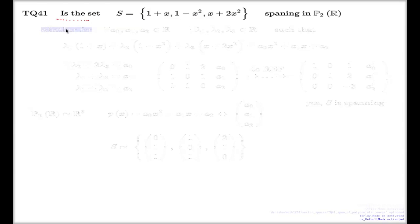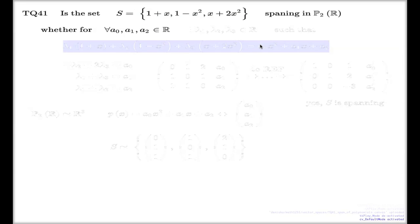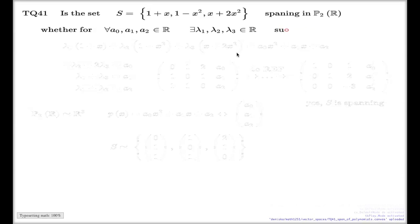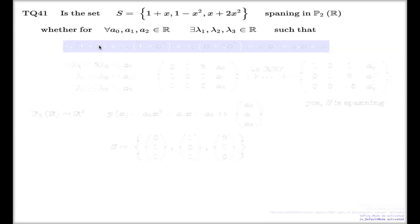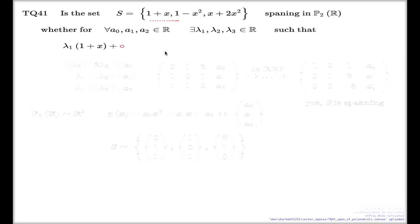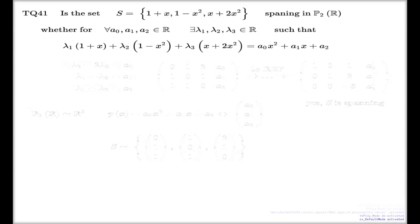Our job is to show whether, for any triple of numbers a₀, a₁, a₂, I can produce another triple of numbers which I will call λ₁, λ₂, and λ₃, such that if I take a linear combination of these polynomials — which are vectors in the current context — that will produce this arbitrarily chosen polynomial with coefficients a₀, a₁, and a₂.